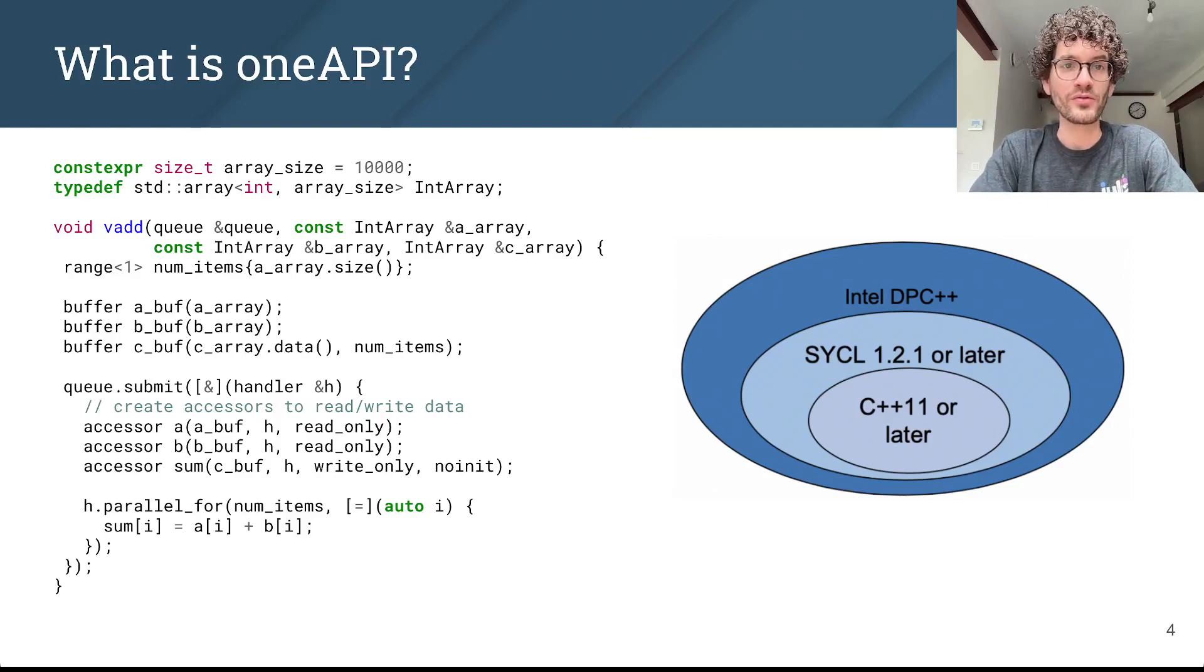then you have to create accessors for the buffers, use a parallel abstraction to perform the addition, and finally submit all of that to a command queue. So this is fairly involved and a low-level way of doing things. And ideally, we just want to use something high-level like Julia here.